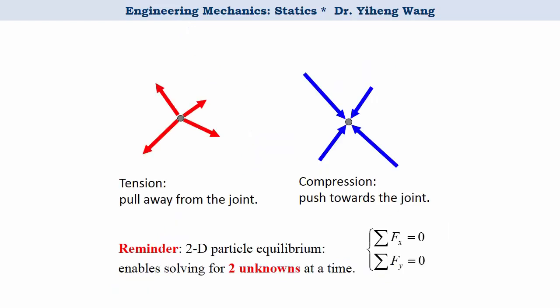If the force developed in the truss member is a tensile force, then on the pin this force pulls away from the pin. If on the other hand the force in the truss member is a compressive force, then on the pin this force pushes towards the pin.